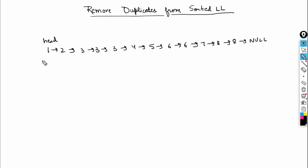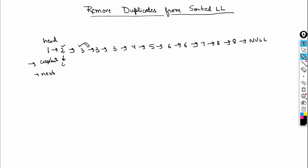We need a different approach — we can't work with just a single current pointer. Let's maintain a current pointer at the head and also a next pointer alongside it. Now let's walk through the solution. We compare current's data and current's next data; if they are not equal, we do current = current.next and move forward.